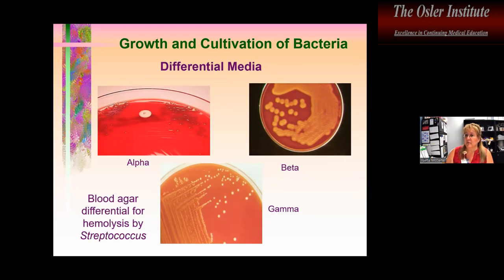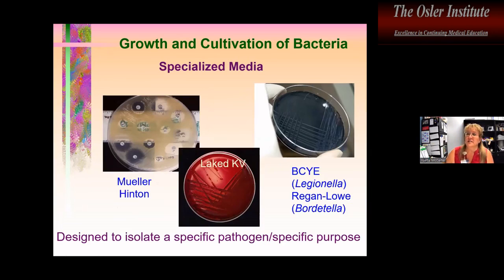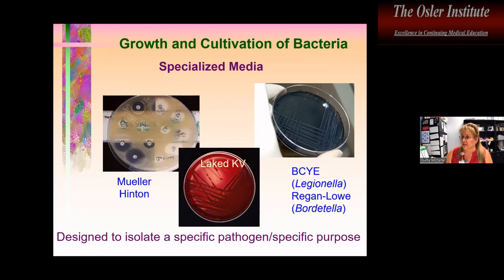Blood agar, although not selective, can be differential. When we discuss streptococci, we'll cover detecting different groups based on their hemolytic patterns: non-hemolytic, alpha-hemolytic showing greening of the agar, or completely hemolytic beta-hemolysis. We've also got specialized media — Mueller-Hinton agar for susceptibility testing, specialized anaerobic culture media, and media for particular pathogens like buffered charcoal yeast extract for Legionella and Regan-Lowe media for Bordetella.